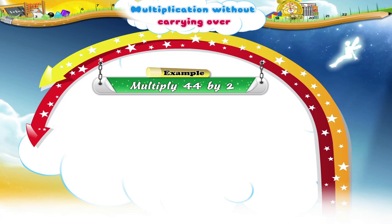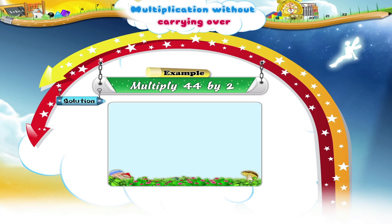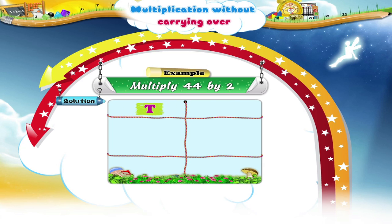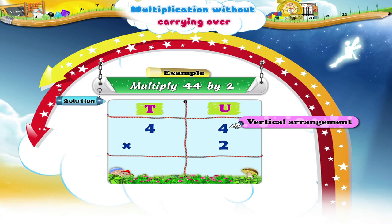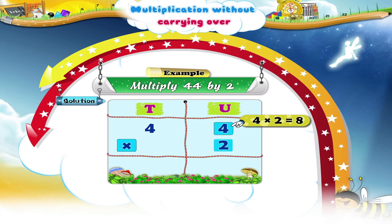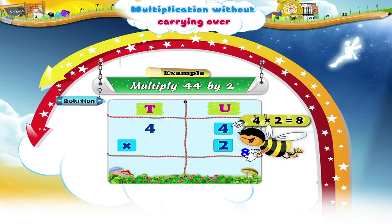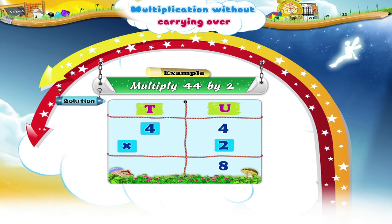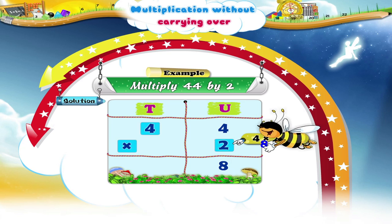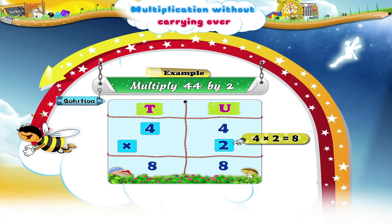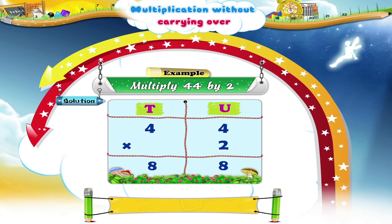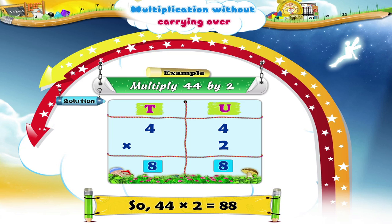Multiply 44 by 2. 4 twos are 4. 4 twos are 8. The product is 88.